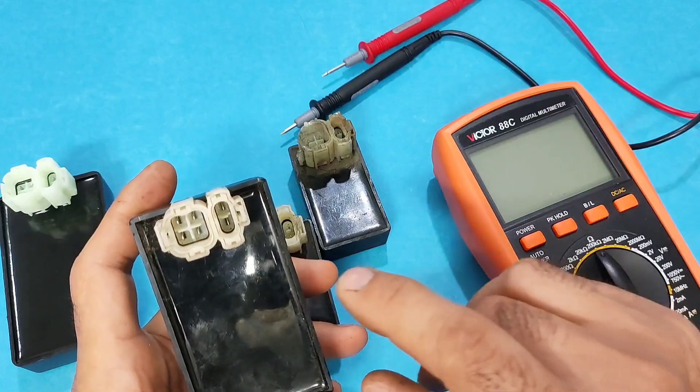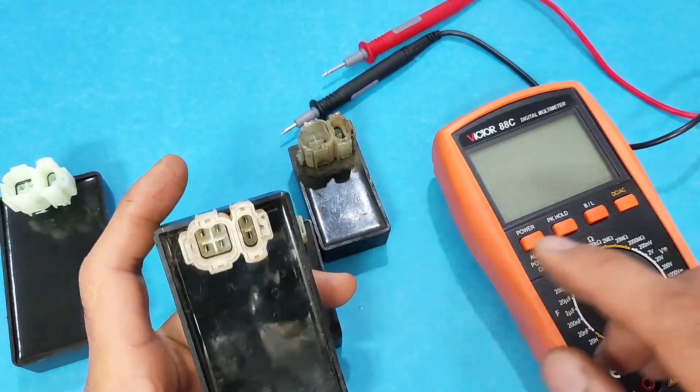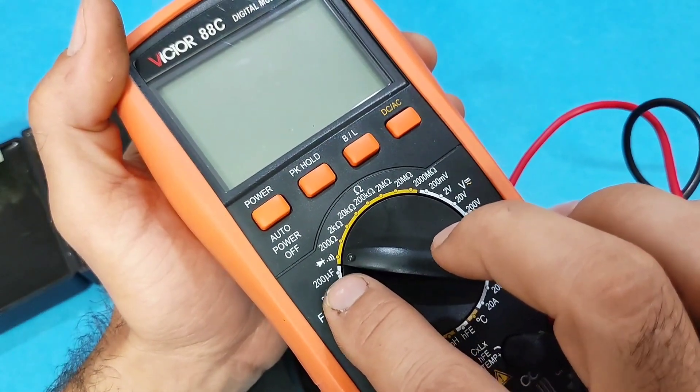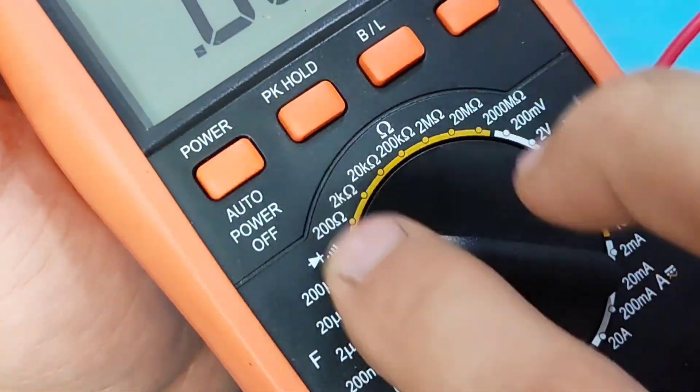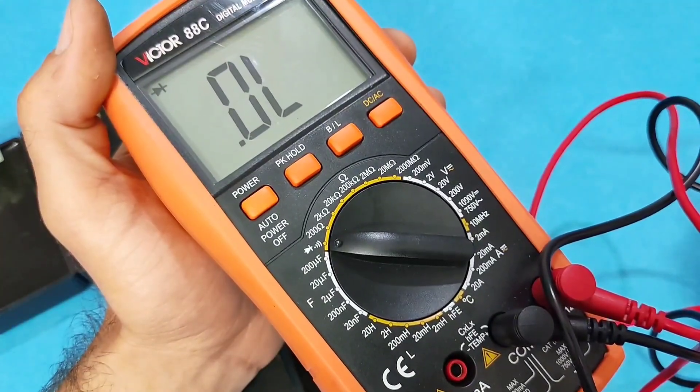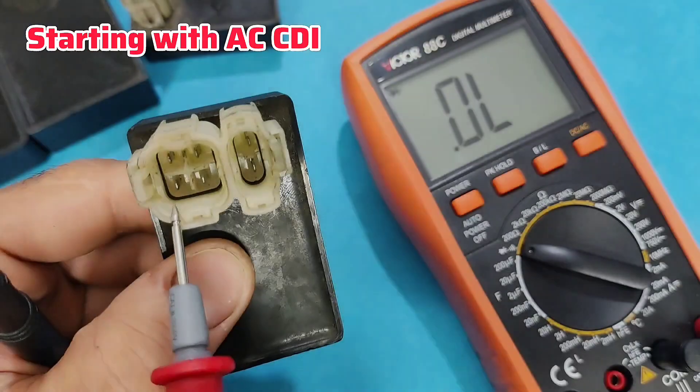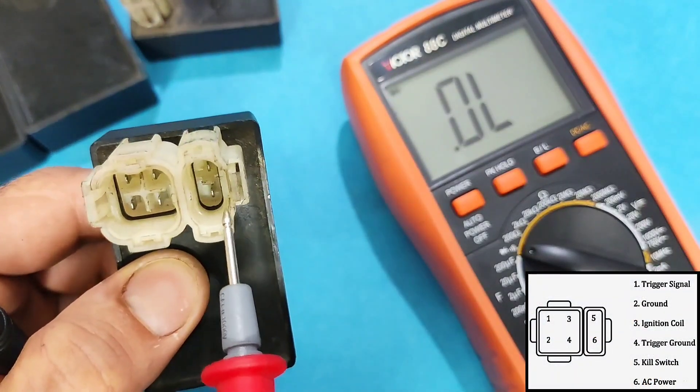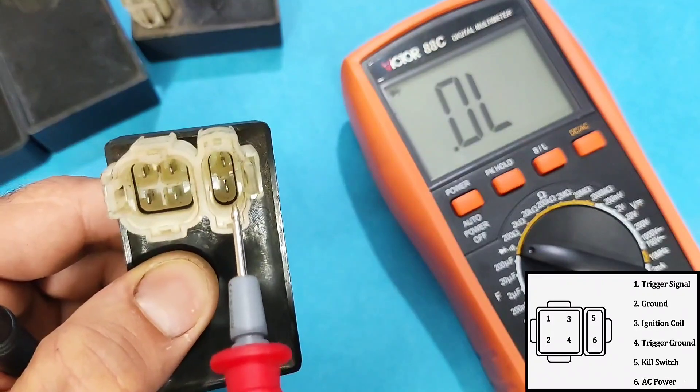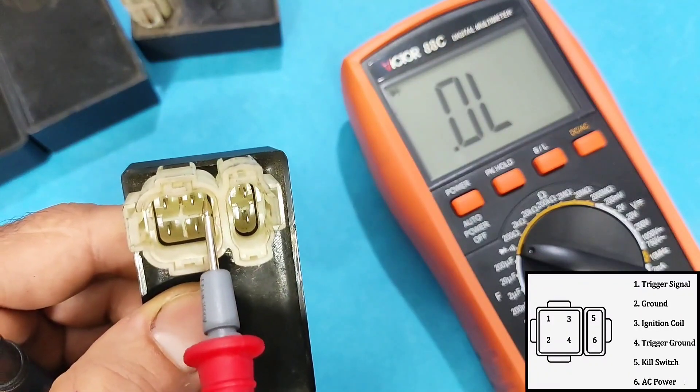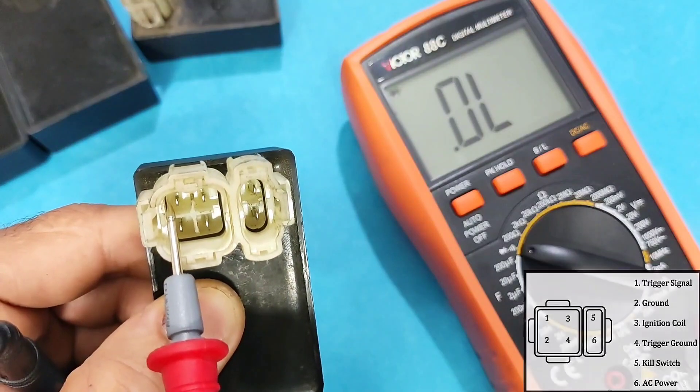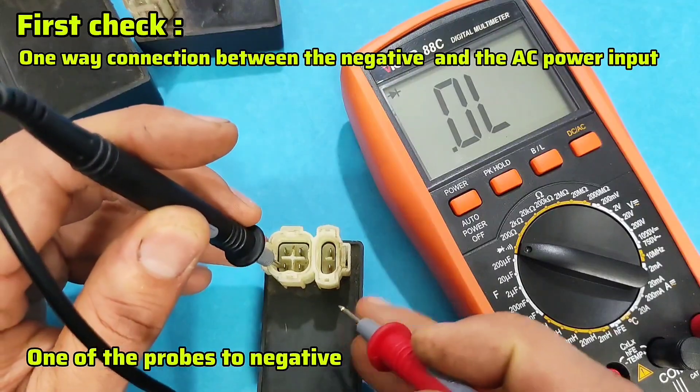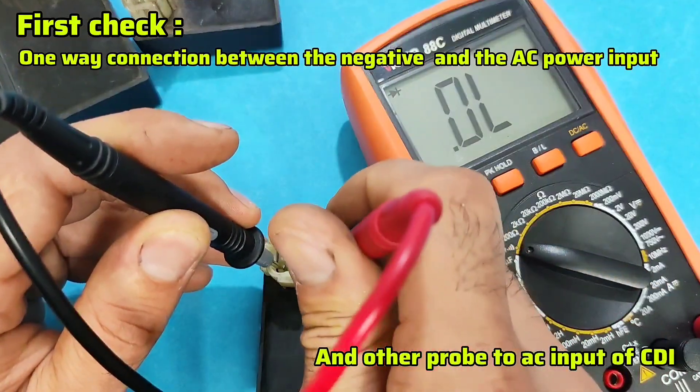Method one: testing the internal diode. For this, we need to set the multimeter on diode mode, the buzzer. In this mode, it also shows resistance value. This is a negative pin, this is AC power, kill switch, ignition coil, and pick-up trigger. To test the AC CDIs, one probe to negative and other to the AC source.